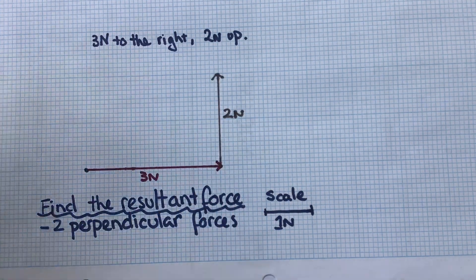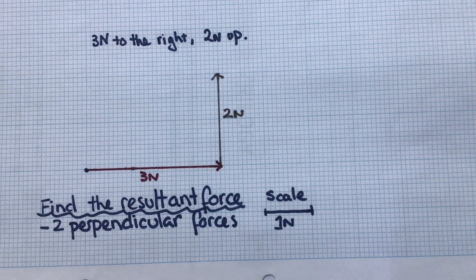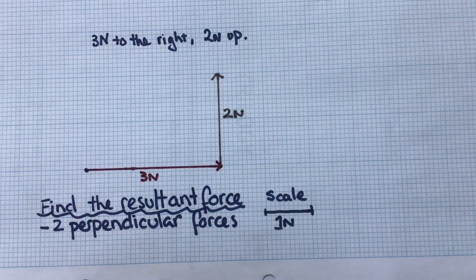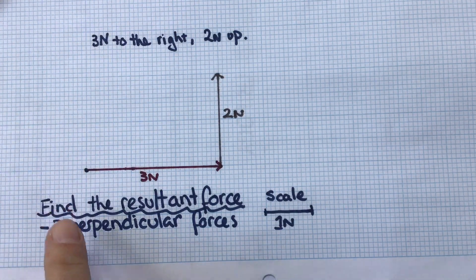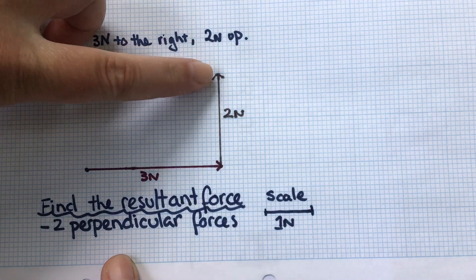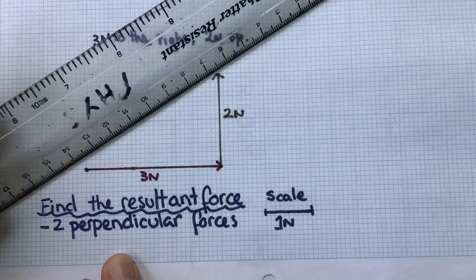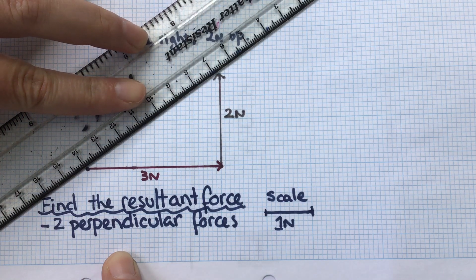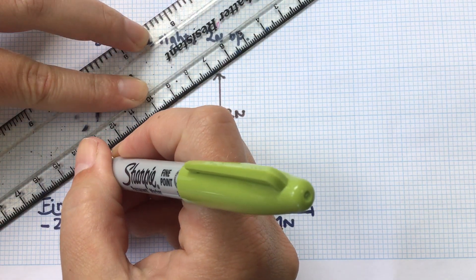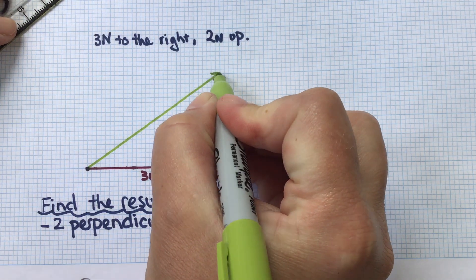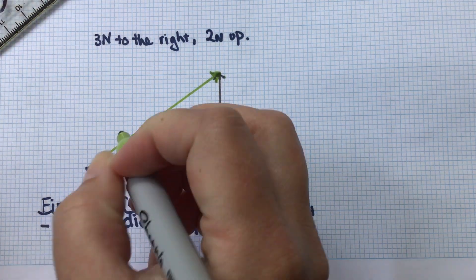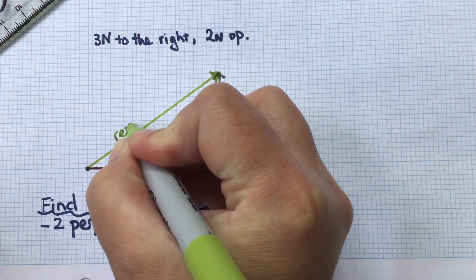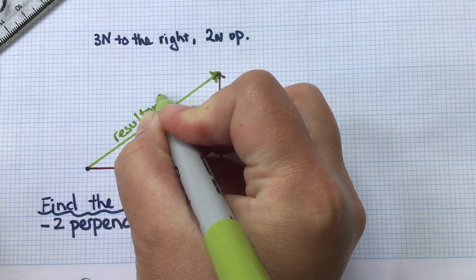Now I'm ready to find my resultant. To find the resultant, I go from the start point to the finish point. So I'm going to draw that vector in with a ruler, put my arrow head on, mark it clearly. So this is the resultant force.